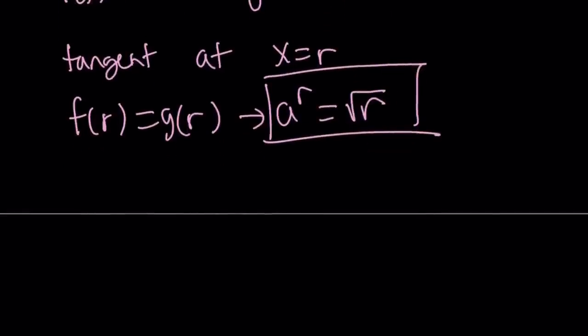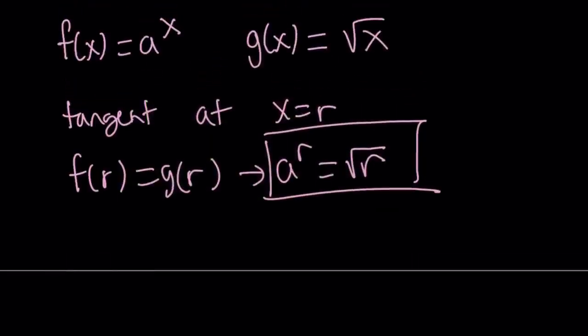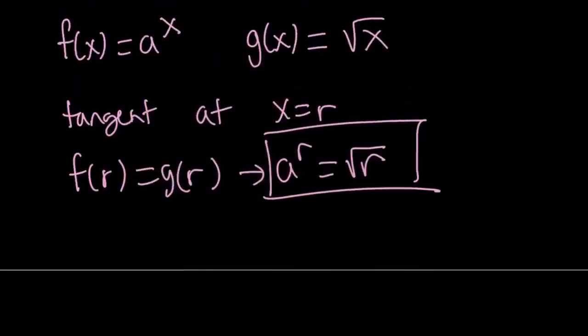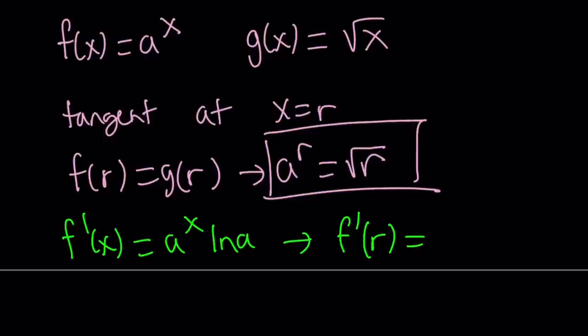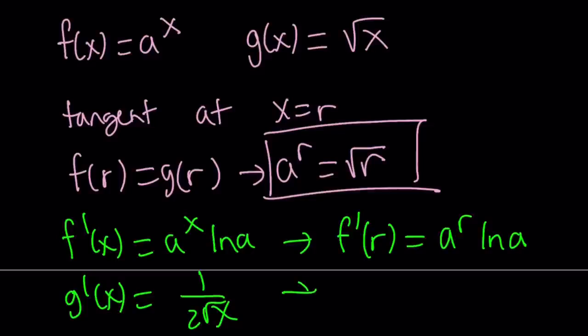And we're going to use substitution here. So it's going to be interesting because we have two unknowns. Now, the second equation is going to come from the derivatives. Since two functions are tangent, that means they have a common tangent at that point. So let's go ahead and differentiate f. We get a to the power x ln a. And if we replace x with r, that gives us a to the power r ln a. Let's differentiate g. That's going to give us 1 over 2 times the square root of x. And then replace x with r in the derivative. g prime at r is going to be 1 over 2 times the square root of r.